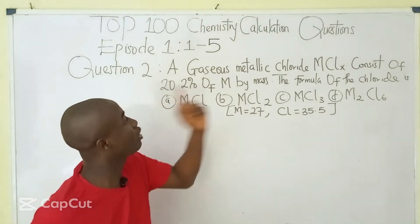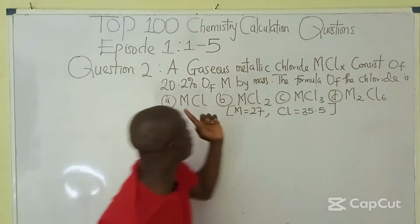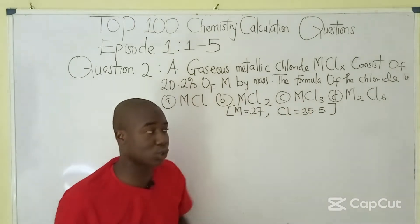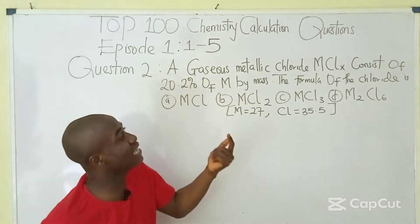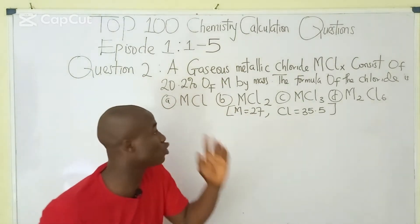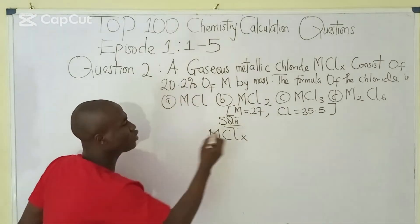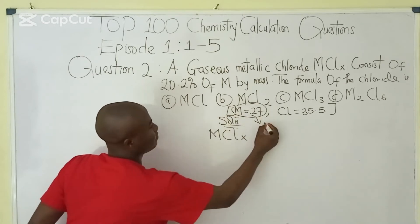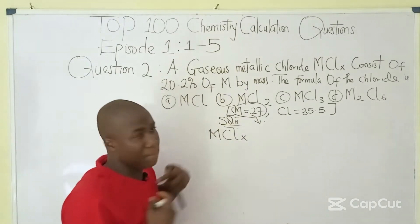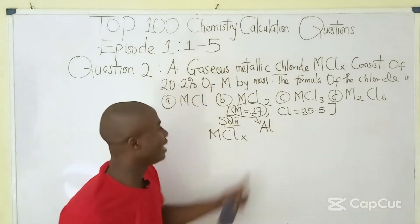The second question says: a gaseous metallic chloride MCl_x consists of 20.2% of M by mass. The formula of the chloride is — and options are given. The atomic mass of M is given as 27. If you are familiar with the atomic masses of elements on the periodic table, you can deduce that this is the atomic mass of aluminum.